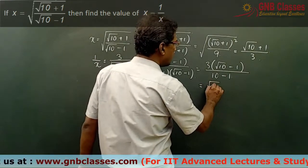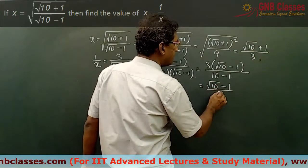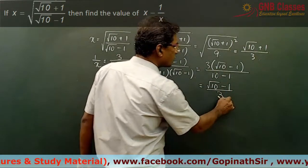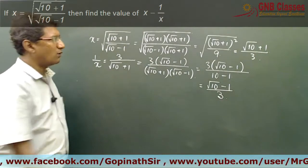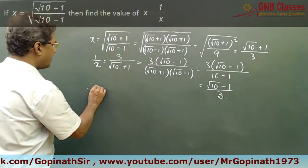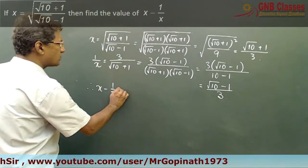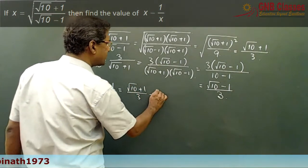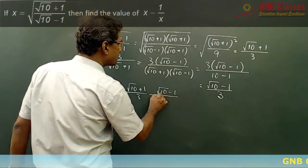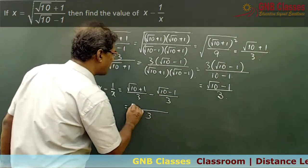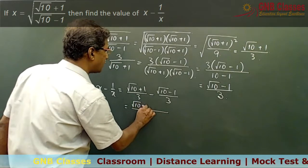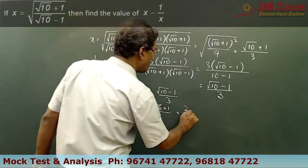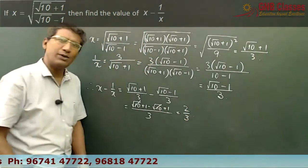That gives us under root 10 minus 1 divided by 9, so the 3 cancels and in the denominator we get 3 only. Therefore x minus 1 by x gives us root 10 plus 1 by 3, minus root 10 minus 1 divided by 3. Taking LCM as 3, we get root 10 plus 1 minus root 10 plus 1, so root 10 cancels and we are left with 2 by 3.